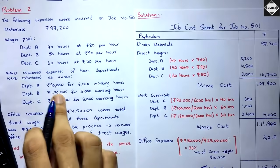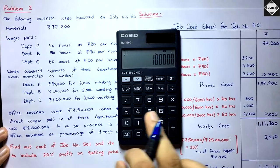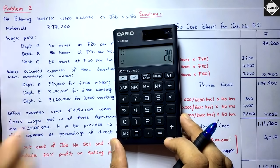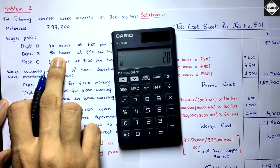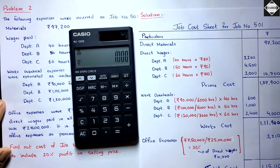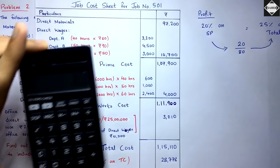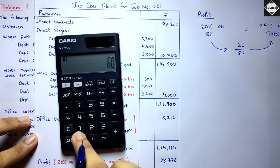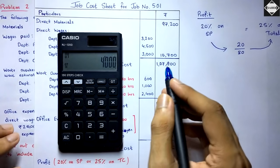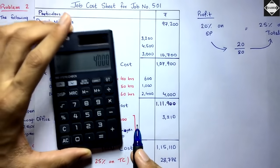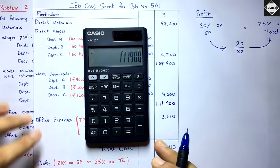Department B: ₹1,00,000 ÷ 5,000 = ₹20 per hour × 50 hours = ₹1,000. Department C similarly gives ₹2,400. Taking the sum: ₹600 + ₹1,000 + ₹2,400 = ₹4,000 total works overhead. Adding to prime cost: ₹1,07,900 + ₹4,000 = ₹1,11,900 works cost.